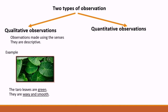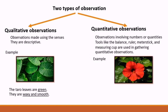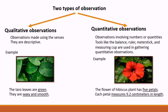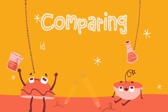For quantitative observations, quantitative observations involve numbers or quantities. Tools like balance, ruler, meter stick, and measuring cup are used in gathering quantitative observations. For example, can you look at the picture, please? This picture is a hibiscus plant or gumamela plant. Now we will use our quantitative observations. The flower of the hibiscus plant has five petals. Each petal measures 9.2 centimeters in length. The description involves numbers or quantities because we use quantitative observations.